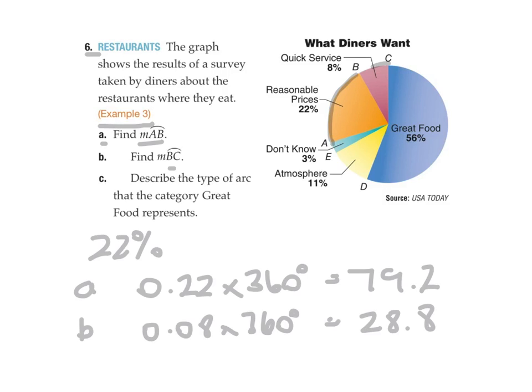Again, showing all your working. And then finally, C. Describe the type of arc the category great food represents. Well, great food is 50 percent, 56 percent. That's greater than 50. So that's got to be a major arc.